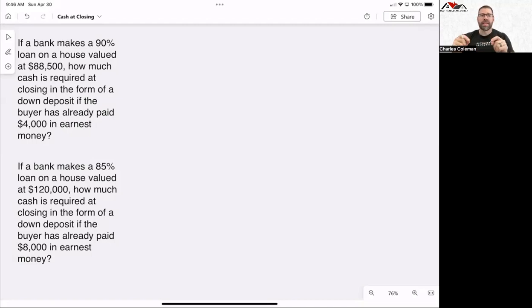If a bank makes a 90% loan on a house valued at $88,500, how much cash is required at closing in the form of a down deposit if the buyer has already paid $4,000 in earnest money? All right, so let's take a look at this.